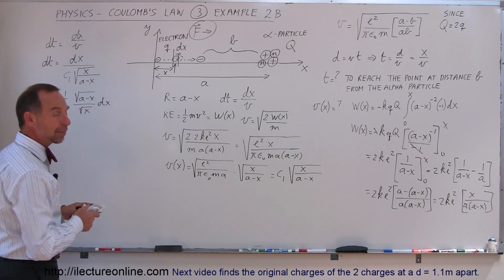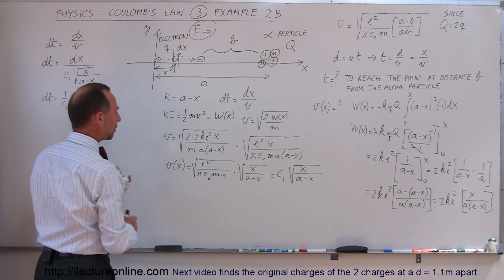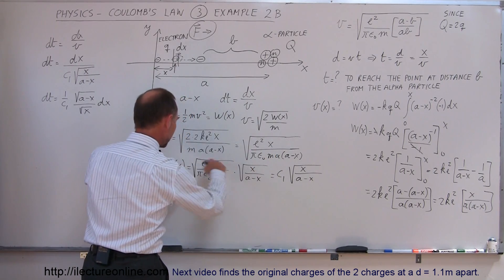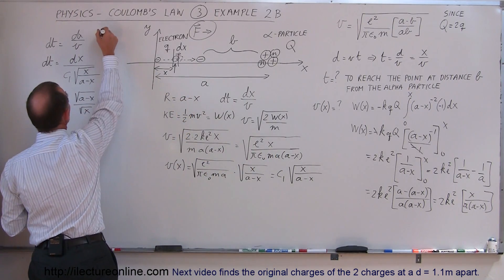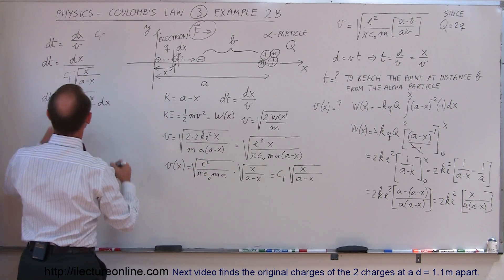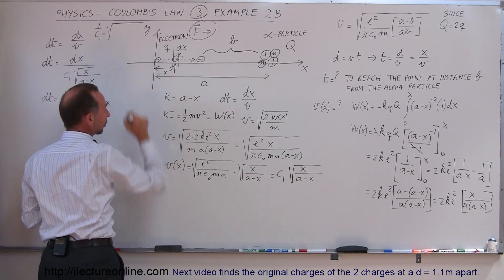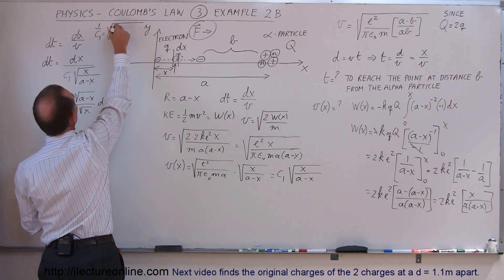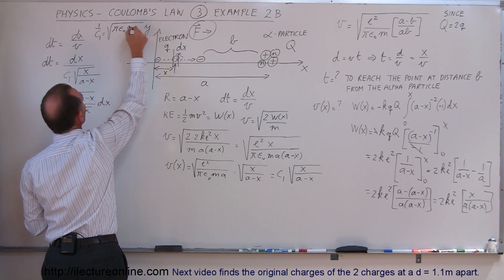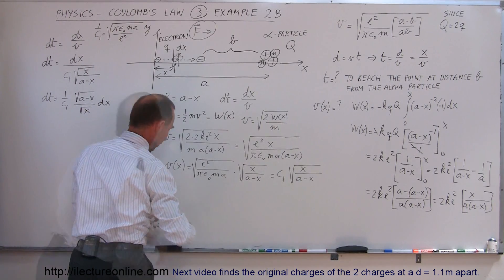I'm not ready to integrate yet, but I'm beginning to run out of board space, so I'm going to erase all of this. The one thing I want to remember is that c1 was equal to the square root of e² over (π ε₀ m a), and 1 over c1 is the inverse — the square root of π ε₀ times m times a divided by e².